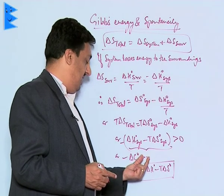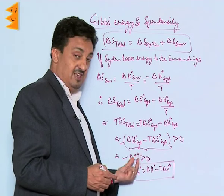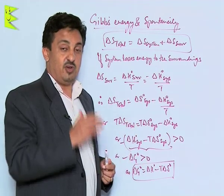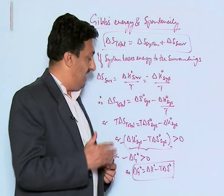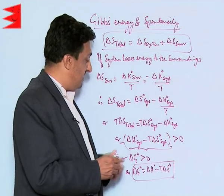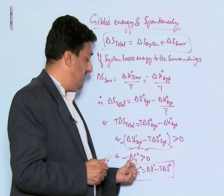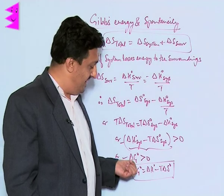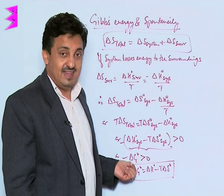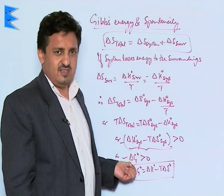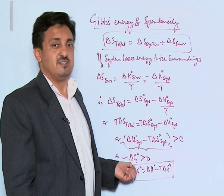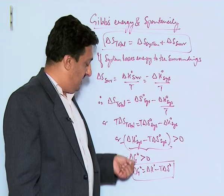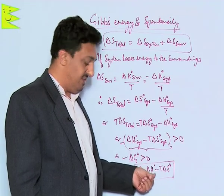The negative sign indicates that for a spontaneous process, delta G must be negative. So if delta G is negative, the process is spontaneous; if it is positive, the process is non-spontaneous; and if it is zero, the reaction is at equilibrium. From this we can derive that delta G equals delta H minus T times delta S.